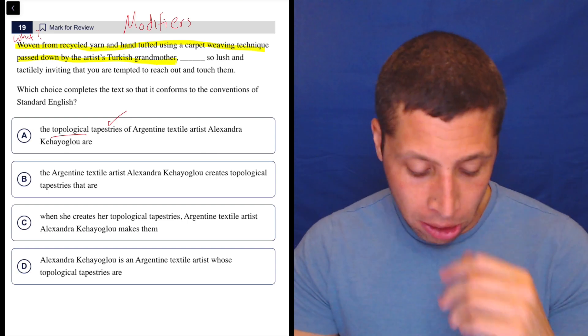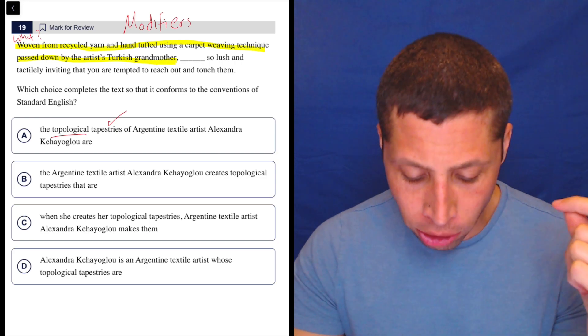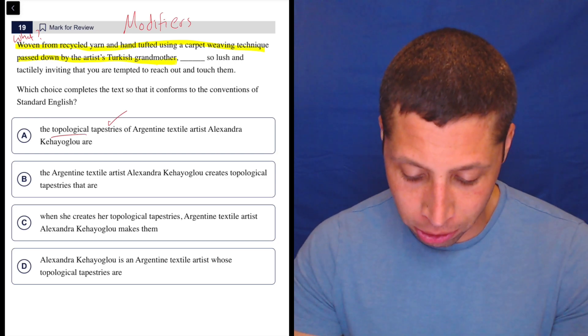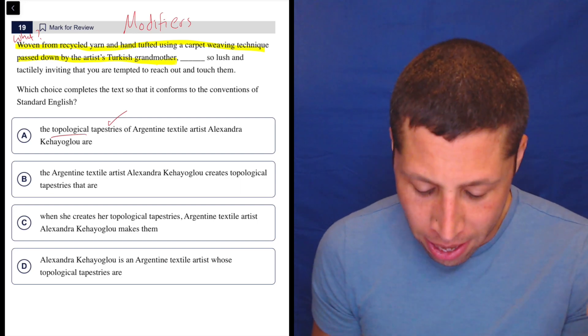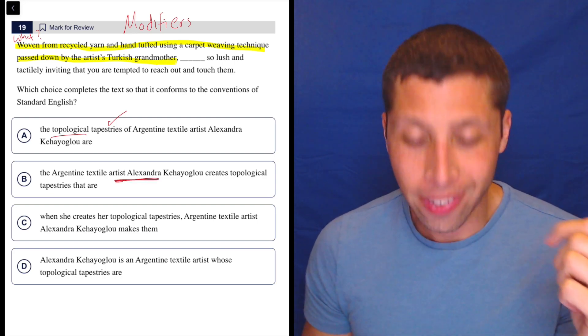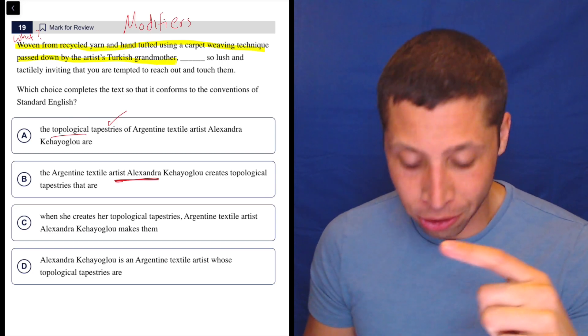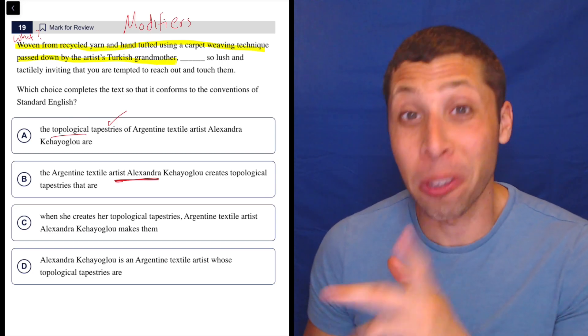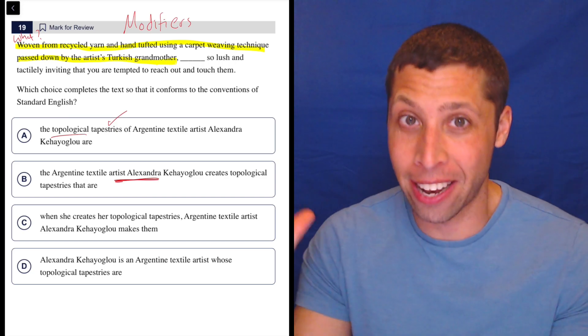Now let's look at the other choices just to compare. B, the Argentine textile artist Alexandra creates topological tapestry. Well, this is saying that she, Alexandra, was woven from recycled yarn. Obviously, that's not true. This is a person. She's not like knitted into existence.